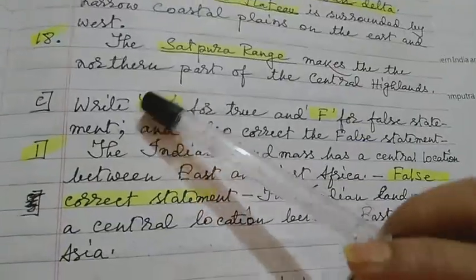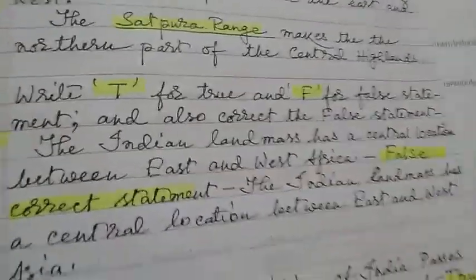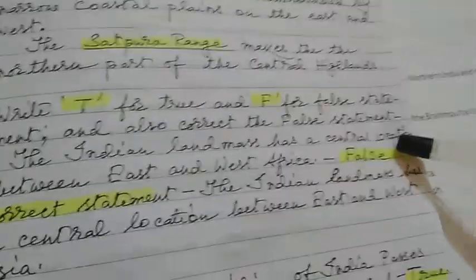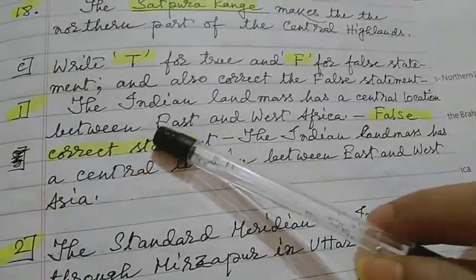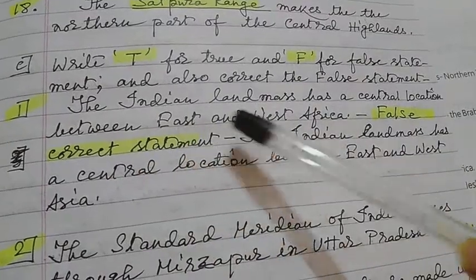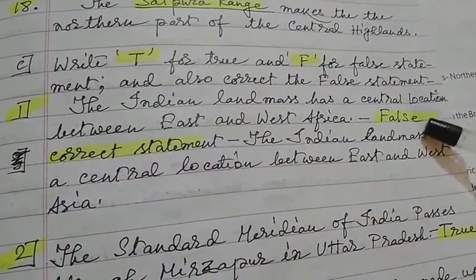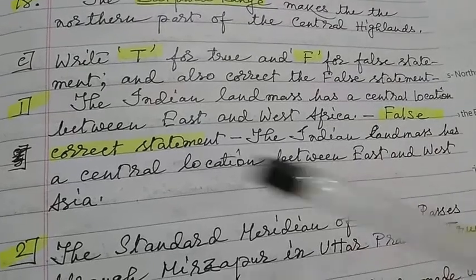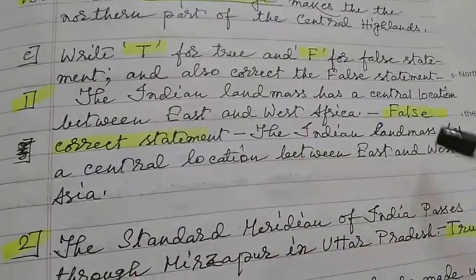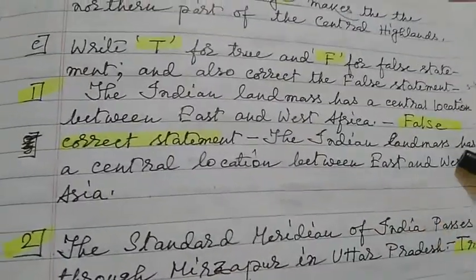Write T for true and F for false, and correct any false statements. Statement 1: The Indian landmass has a central location between East and West Africa — this is false. The correct statement is: the Indian landmass has a central location between East and West Asia.